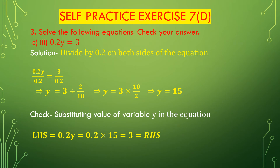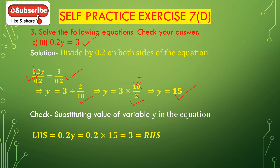Now we solve question number 3b: 0.2y = 3. Dividing both sides by 0.2, we get y = 3 divided by 0.2. Since 0.2 is 2 divided by 10, we get 3 divided by (2/10), which is 3 multiplied with 10 divided by 2. Cancelling gives 3 multiplied with 5 = 15. So y = 15.